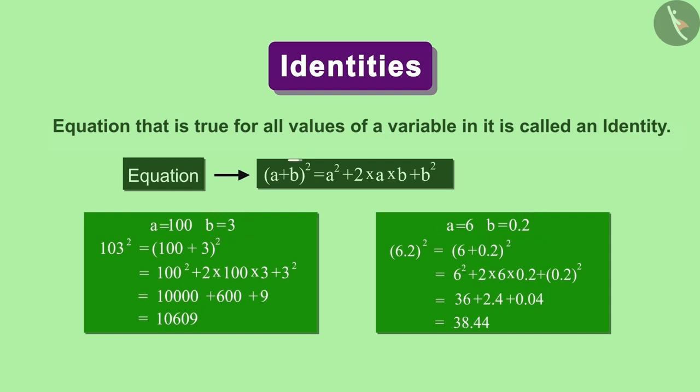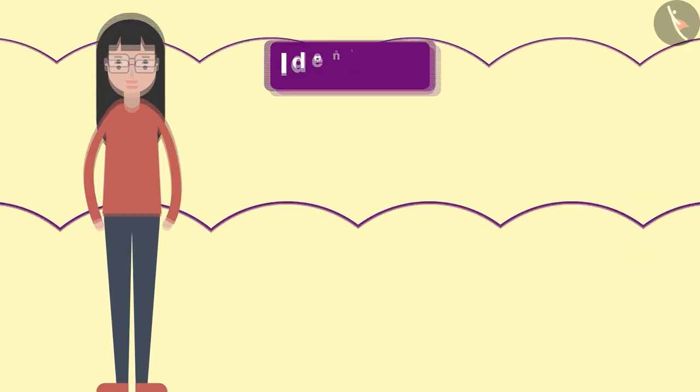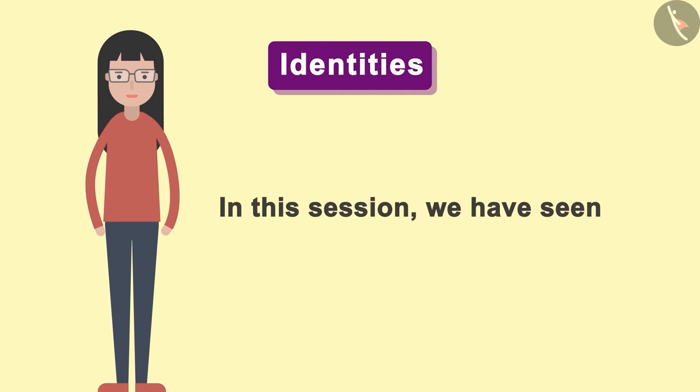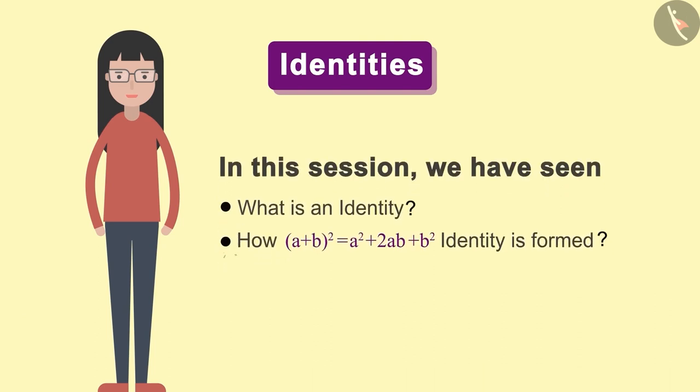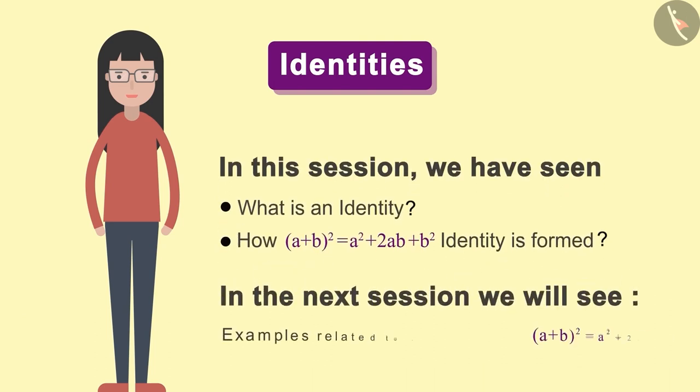For any value of A and B, the expression on the left side is equal to the expression on the right side. In this session, we have seen what an identity is. We have also seen the proof of this identity. In the next session, we will see some more examples of this identity.